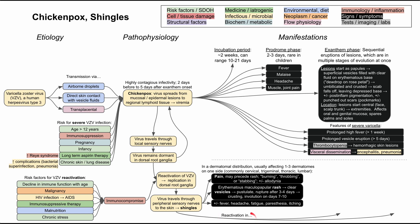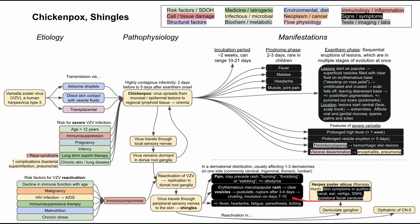There are two specific shingles reactivations worth discussing individually. Reactivation in the geniculate ganglion is called herpes zoster oticus, also known as Ramsay Hunt syndrome. Manifestations include the typical shingles rash and pain inside the auditory canal and external ear, vertigo, sensorineural hearing loss, and ipsilateral facial paralysis. If shingles occurs in the ophthalmic division of cranial nerve 5 — the trigeminal nerve — it causes herpes zoster ophthalmicus, with manifestations including conjunctivitis, keratitis, and intraocular infections, which can lead to glaucoma and blindness in severe cases.